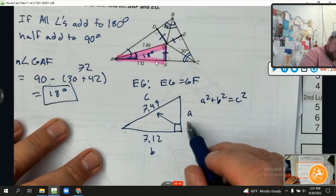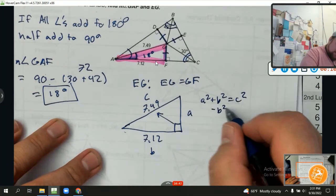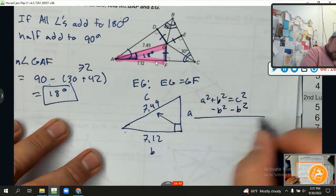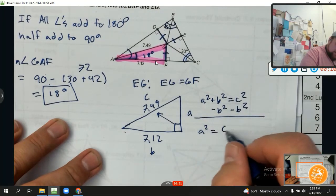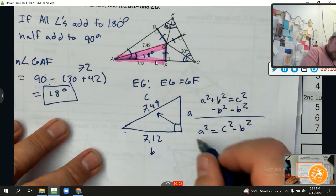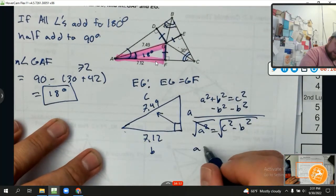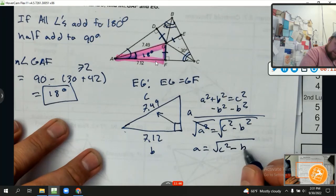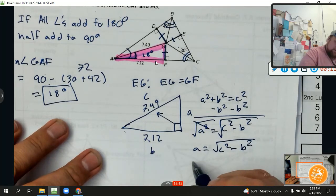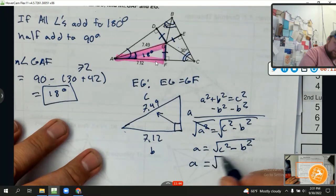And here's what I know, guys. Don't forget this, this is something you want to keep in your repertoire. If a squared plus b squared equals c squared, and I want to solve for a, I want to subtract that b squared over, and I get that a squared equals c squared minus b squared.